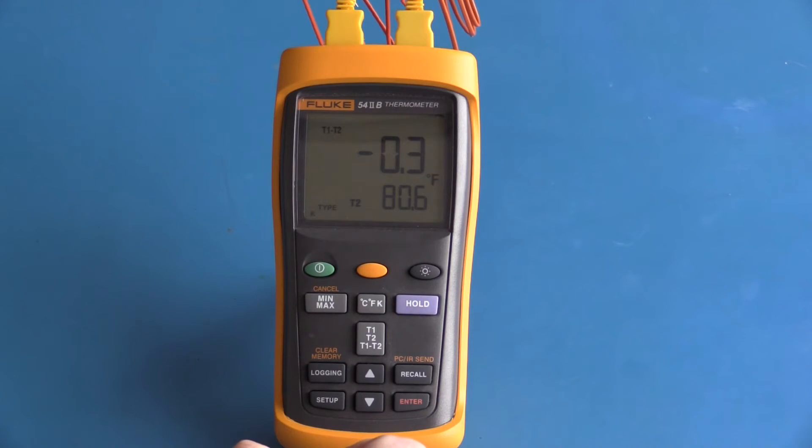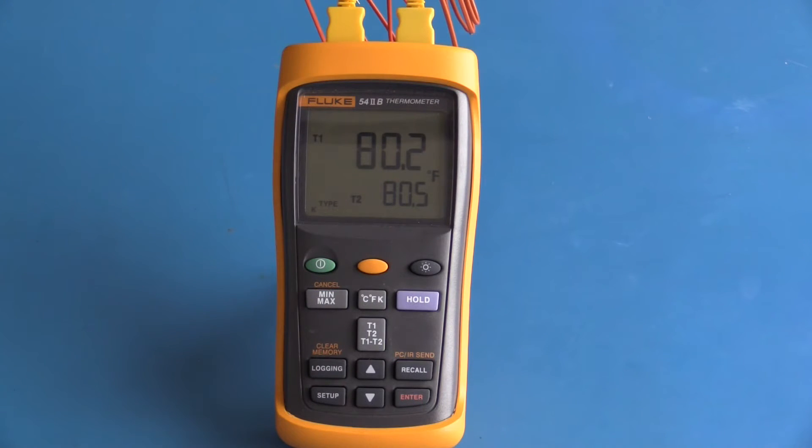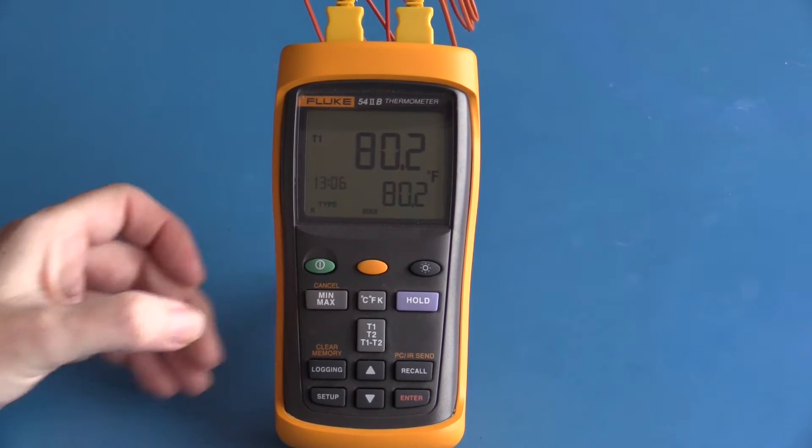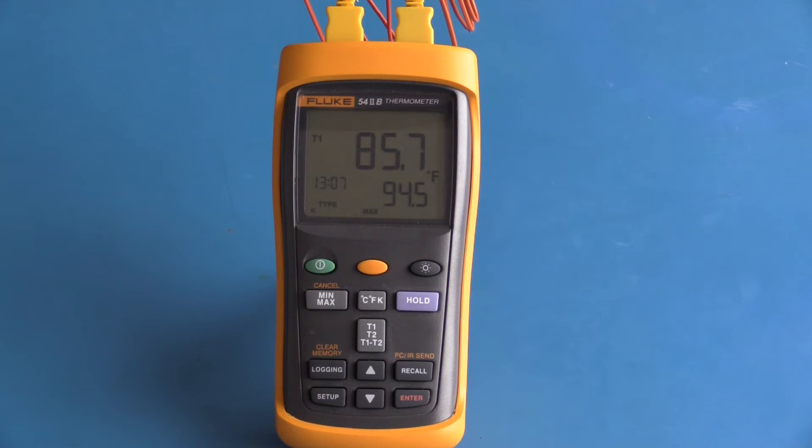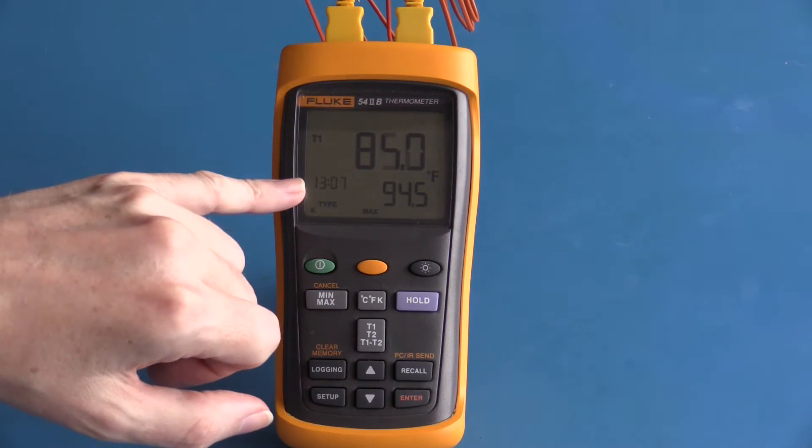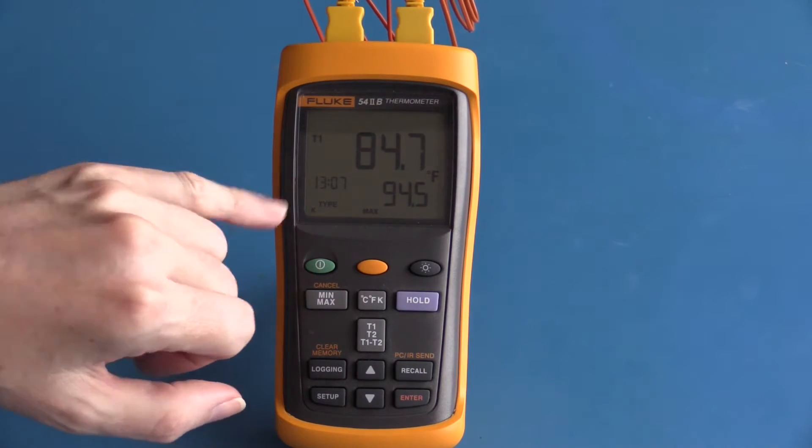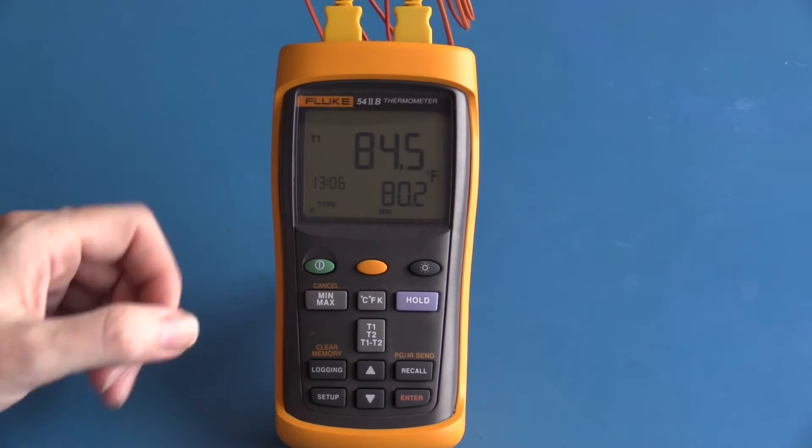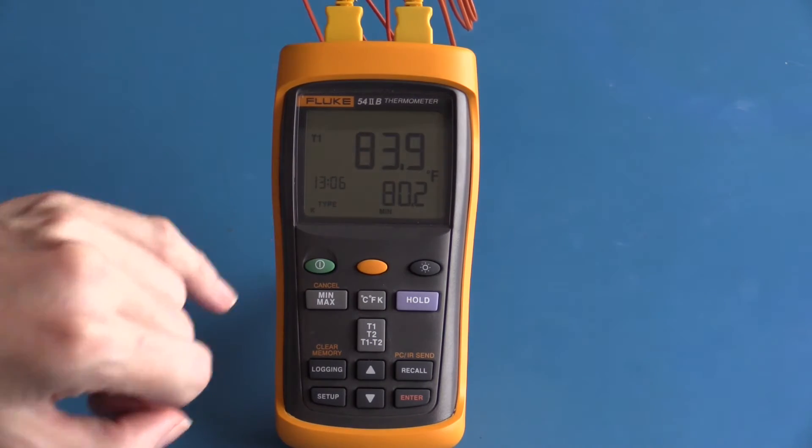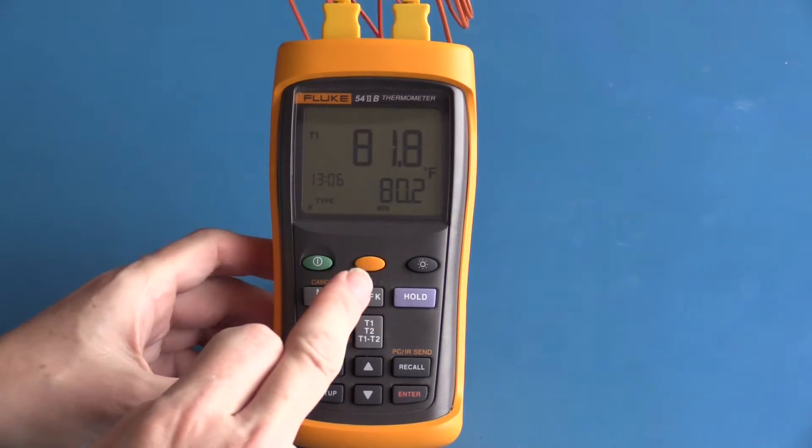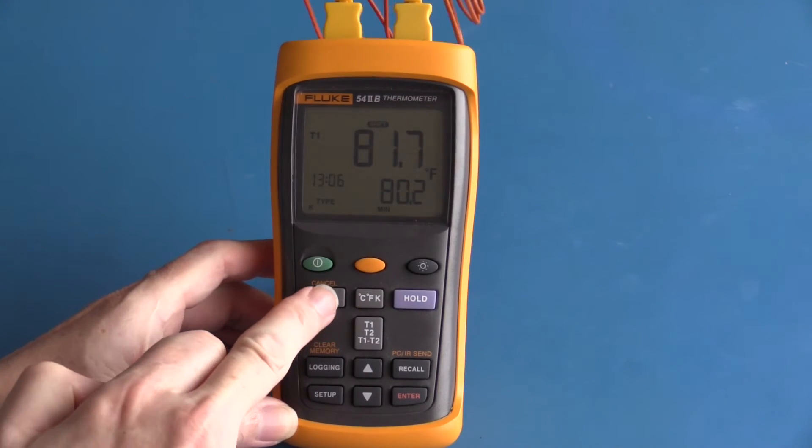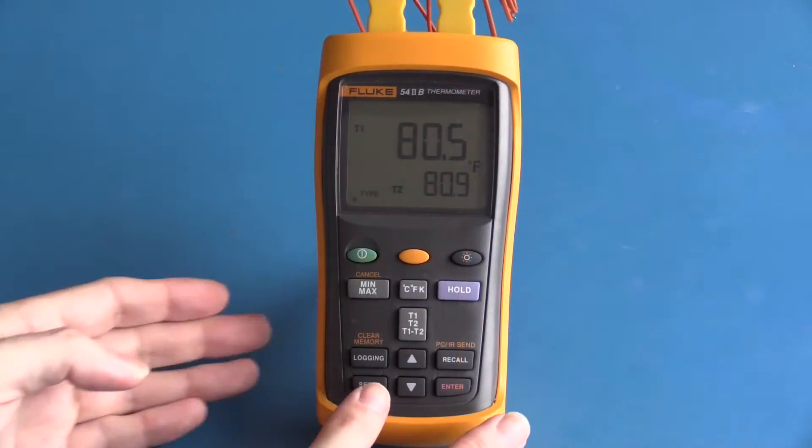There is also a min max function. A nice feature of this thermal meter when in min max mode is time stamping. Here I can see my maximum was taken at 13:07 and if I switch to my minimum I can see my time stamp is 13:06. To exit min max I press the secondary function button followed by the min max button to cancel.